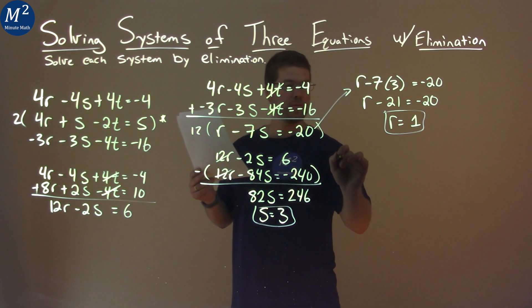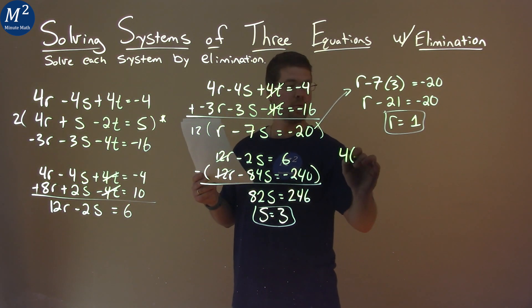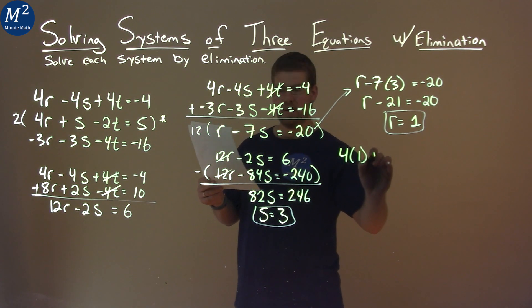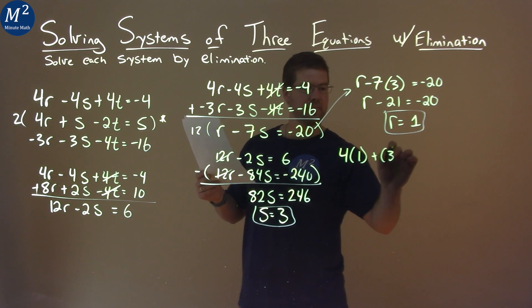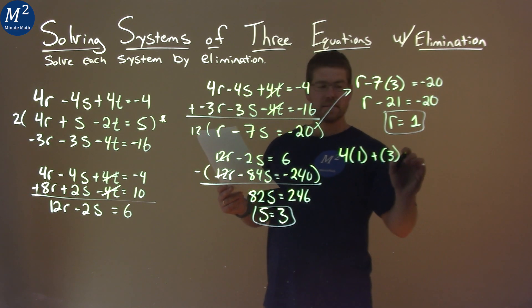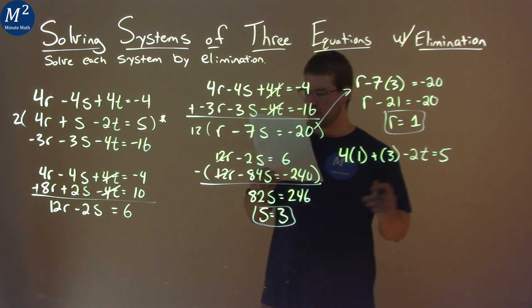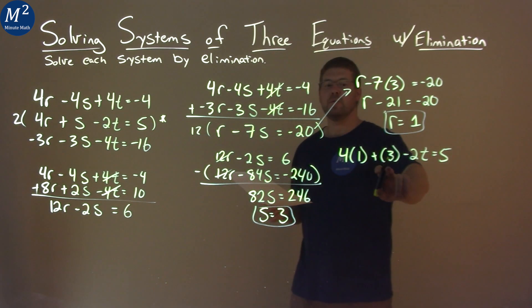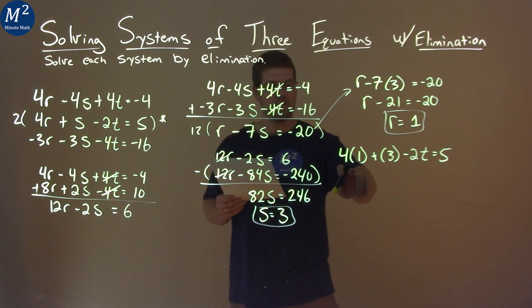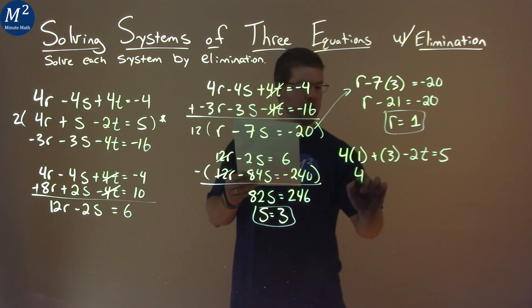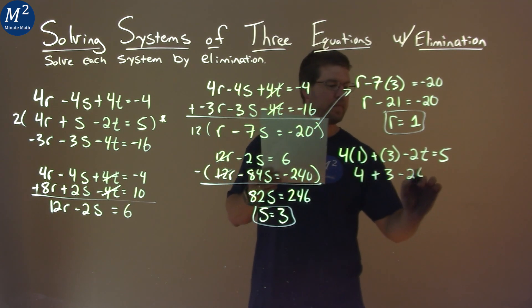I have 4, and instead of r, I'm going to put 1, and we found, plus s, which is 3, minus 2t, equals 5. And now, using that, we can solve for t. 4 times 1 is 4, plus 3, minus 2t, equals 5. 4 plus 3 is 7, minus 2t, equals 5.